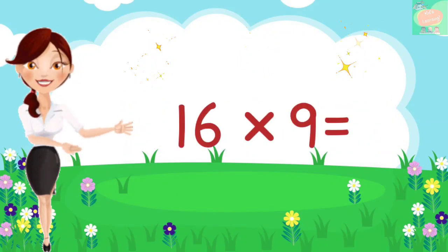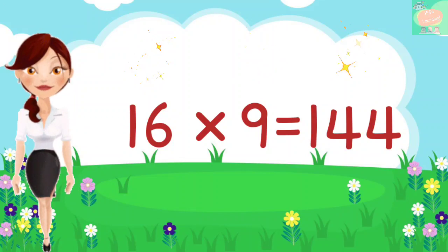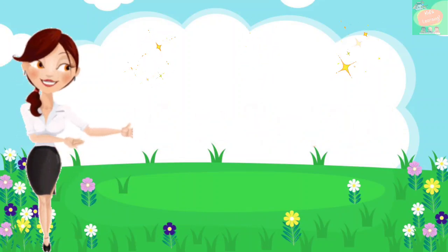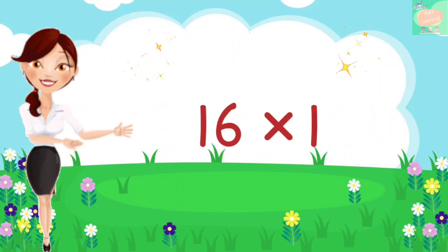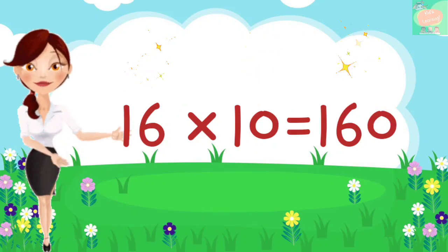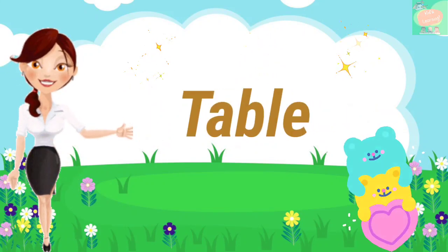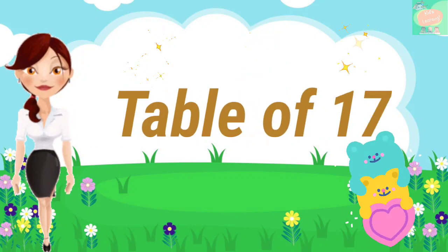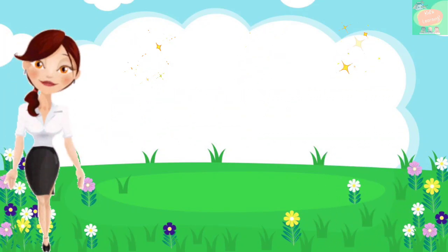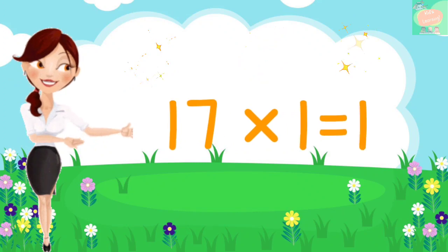16 nines are 144, 16 tens are 160. Very good! Let's learn table of 17. 17 ones are 17.